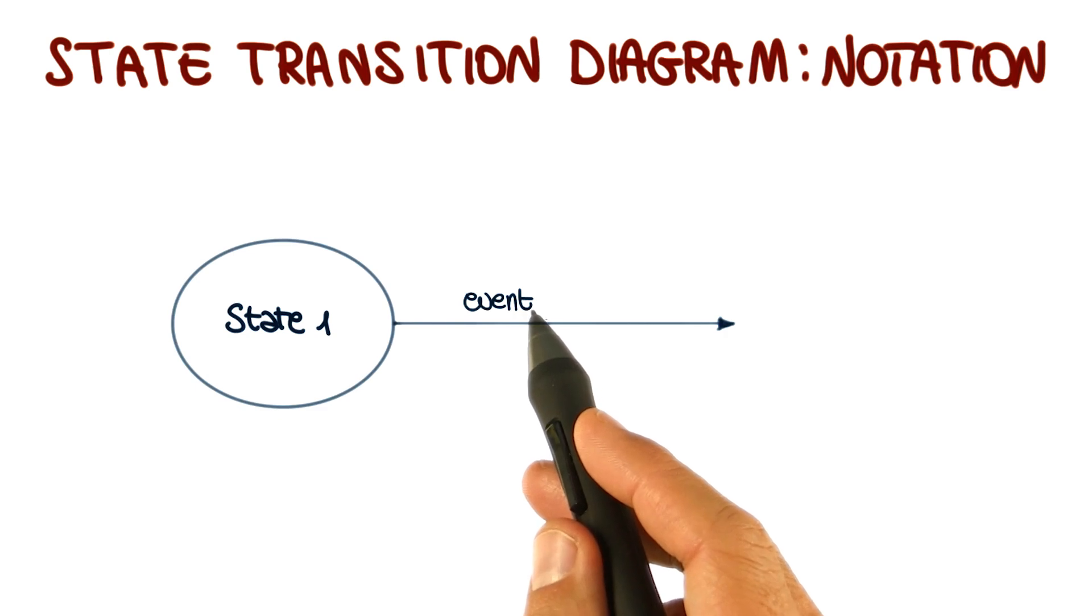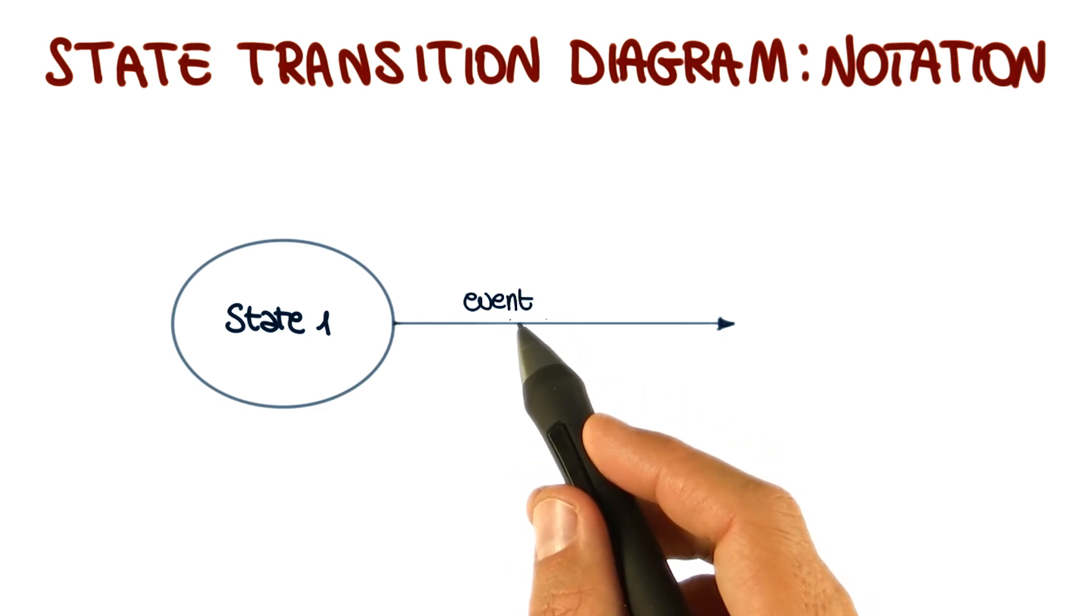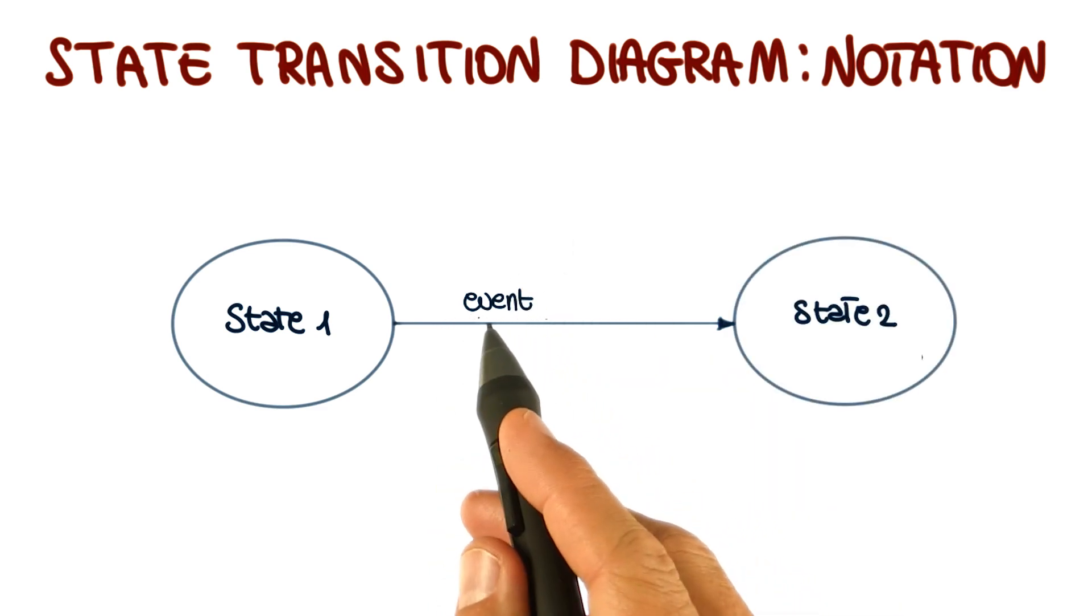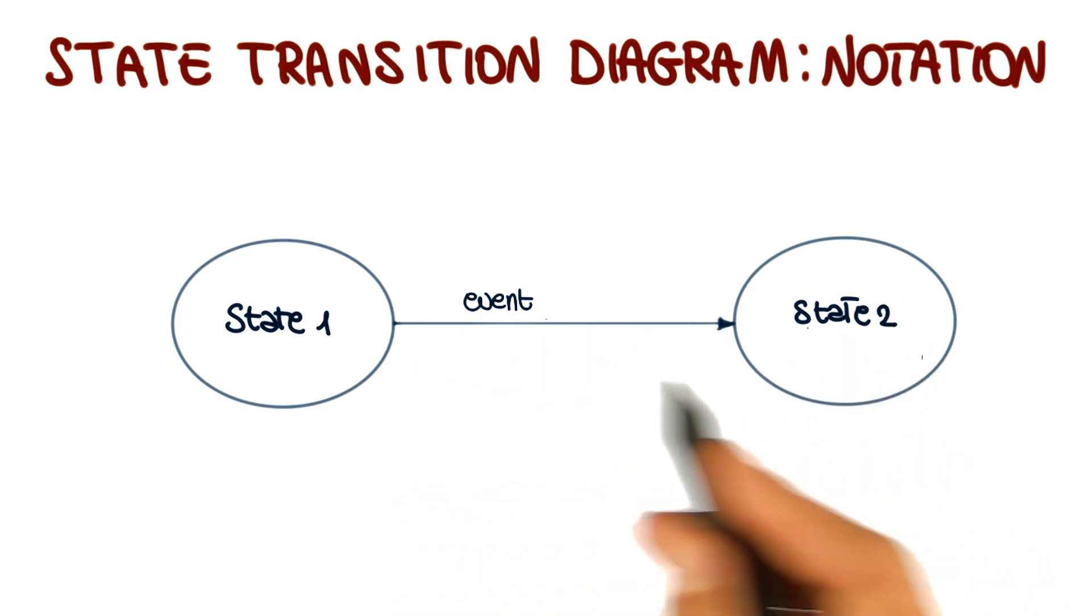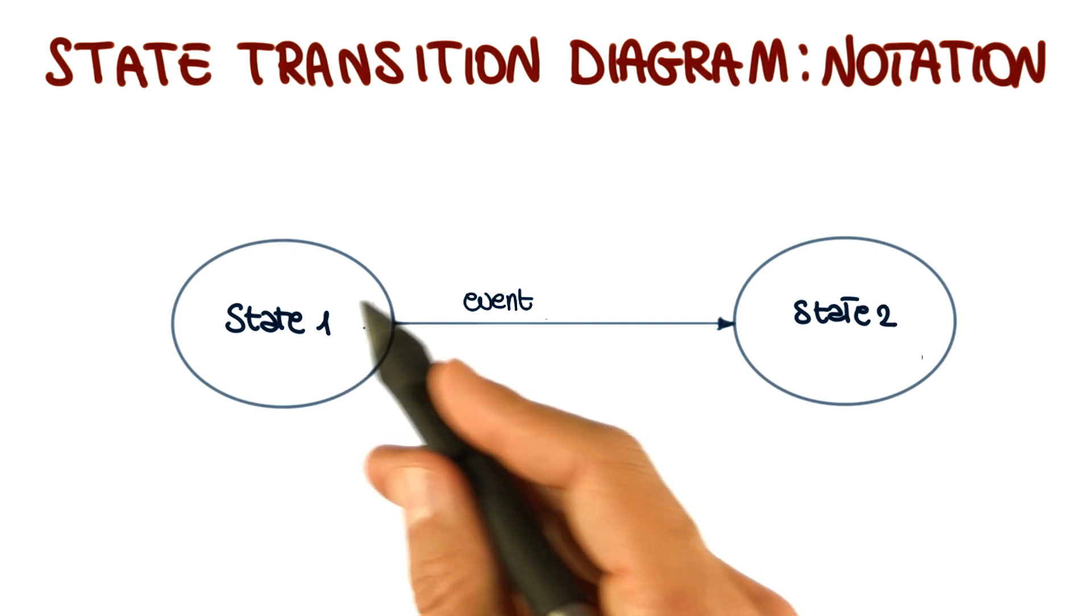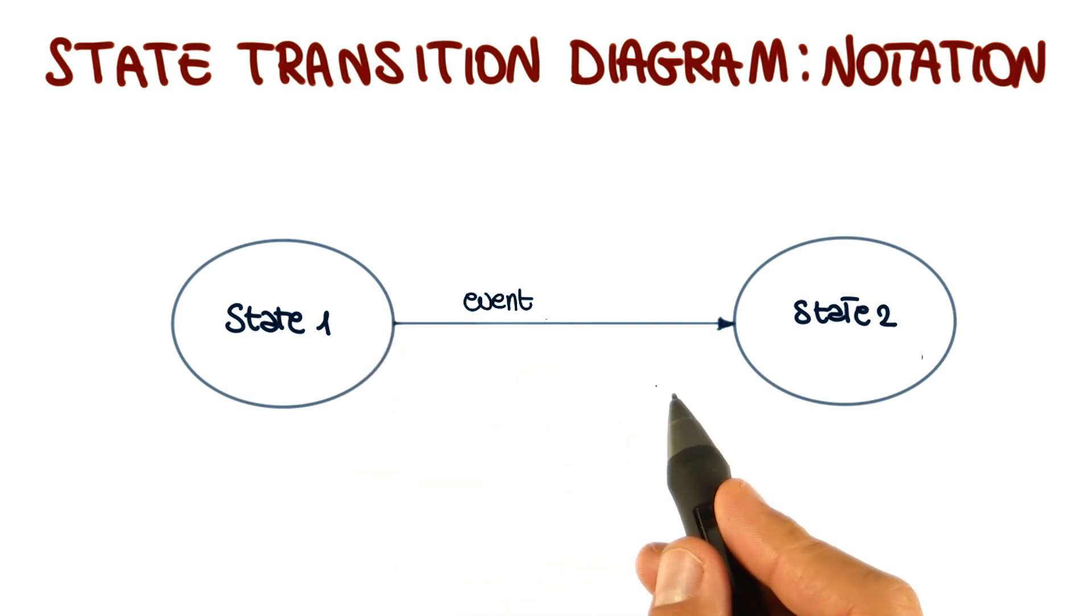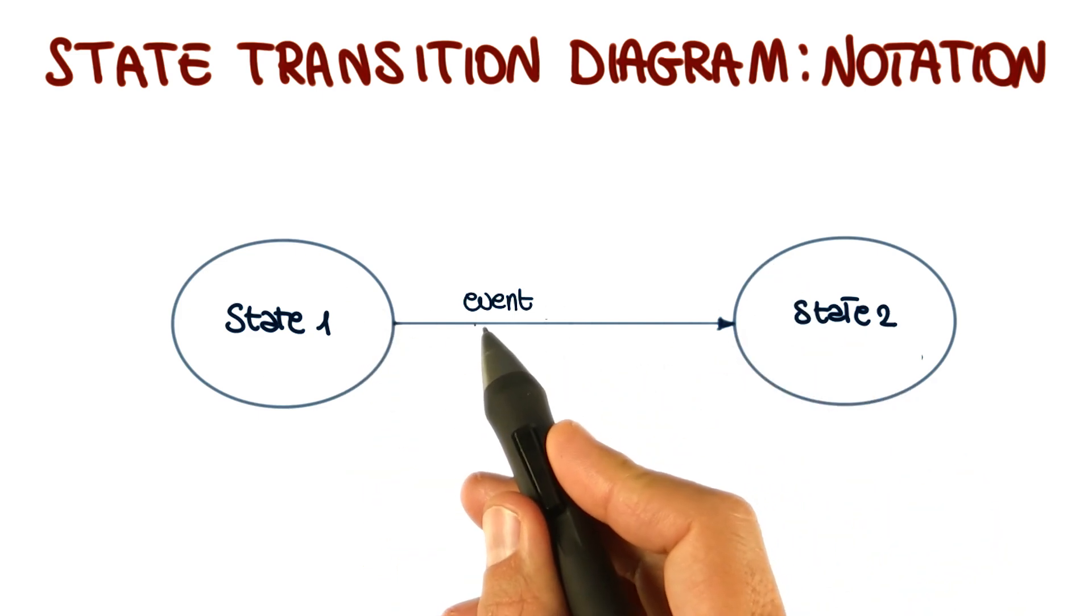Transitions indicate the passage from one state to another state as the consequence of some external stimuli. Notice that not all events will cause a state transition. For example, some events might be consumed within a single state. But in most cases, an event will trigger some state transition.